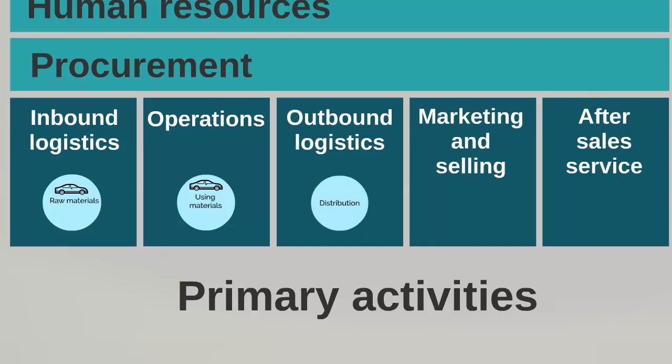Outbound logistics would be the distribution — how are we going to get our cars out to the showrooms? Are we going to ensure the most on-time deliveries? Can we distribute around the greatest possible scope so we can sell all over the world? Marketing and selling could be a television advert for one of the cars. If you look at Mercedes adverts, it's always about quality and luxury. BMW is all about being exciting. Smaller cars like Fords and Kias are more about fun.